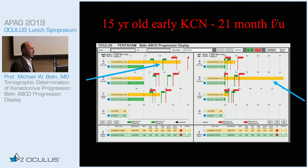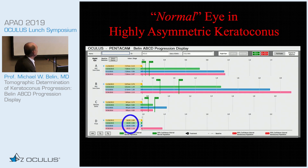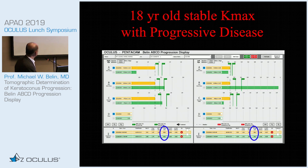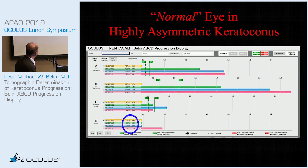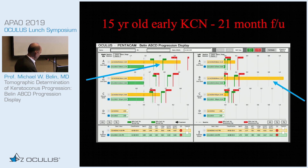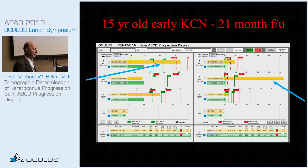Here is another 15-year-old with early keratoconus in a 21-month follow-up. Interestingly, one eye shows statistically significant change on the anterior surface, while the other eye shows statistically significant change on the posterior surface. This demonstrates that both surfaces can change independently.